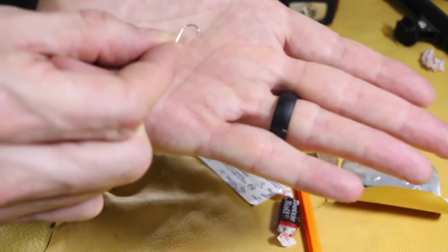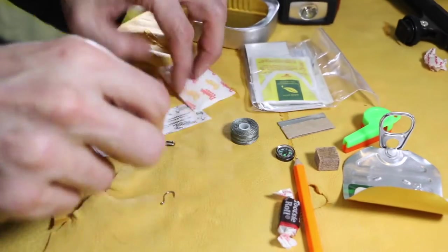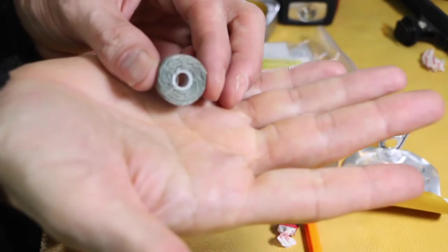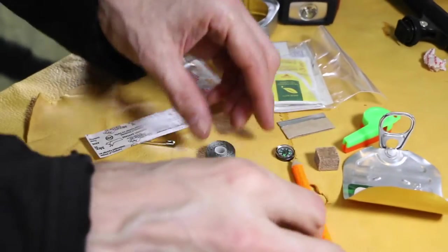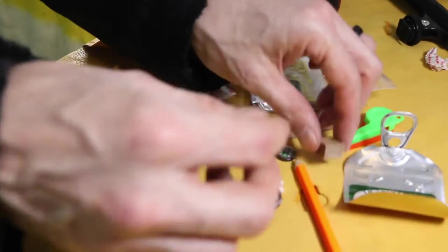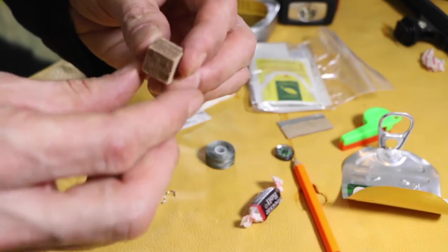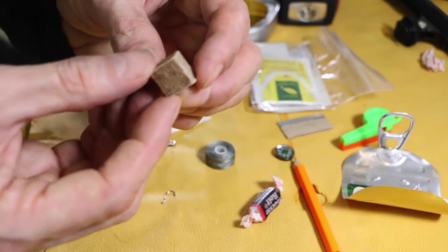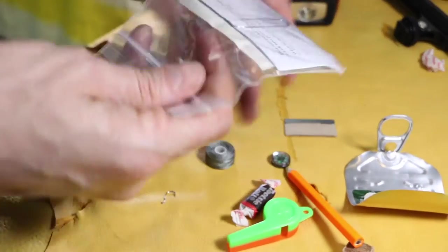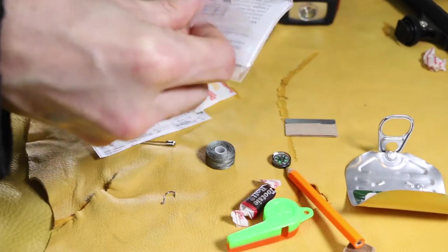Fish hook, band-aid, sugar. We got some utility thread for fixing things or fishing. Got tootsie roll for some energy. I believe this is a fire starter, that's what it looks like to me. Whistle, compass. Now let's see what's in this guy.